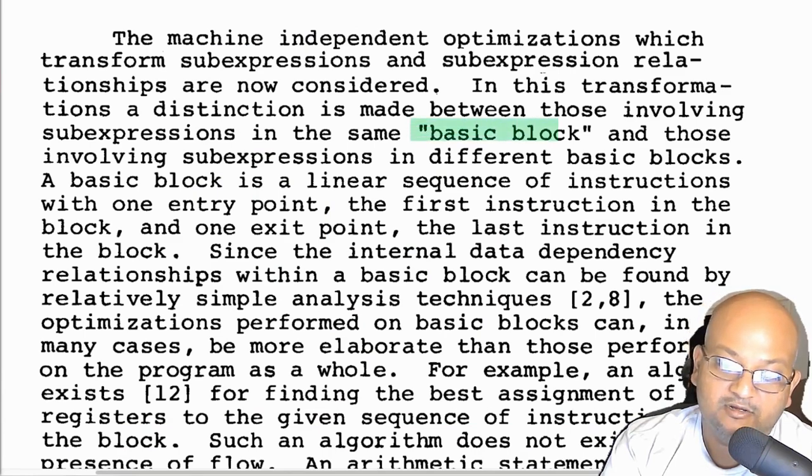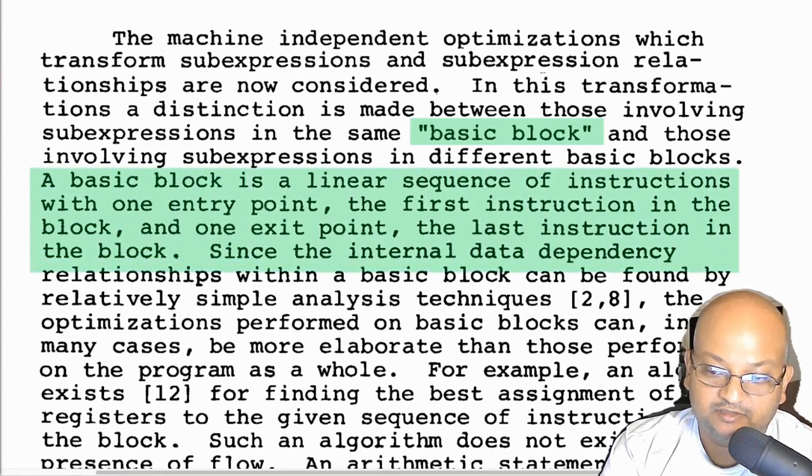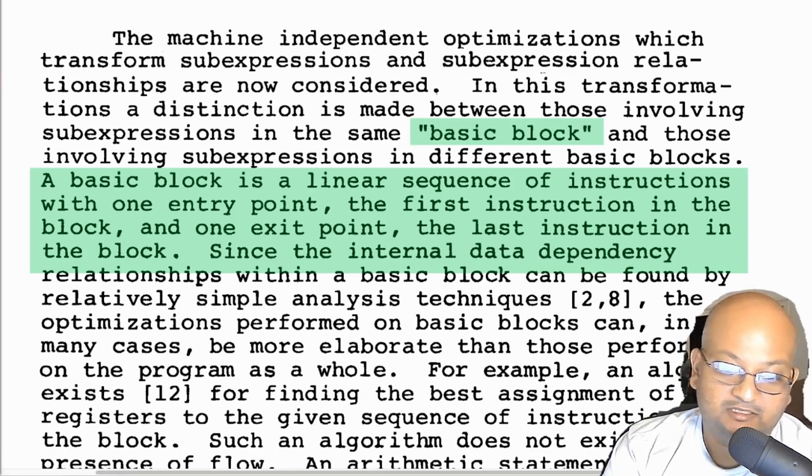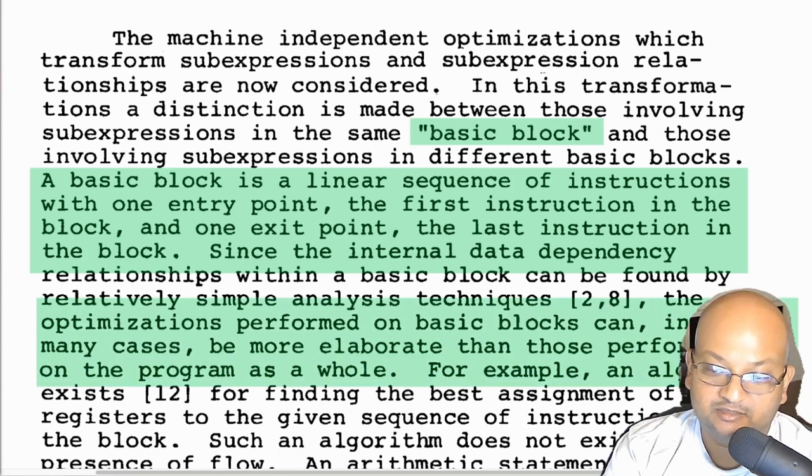Now we get into the optimizations that work on basic blocks. What is a basic block? It is basically a sequence of instructions where control enters only at the top, the beginning of the basic block, and control exits only at the end of a block. And the reason basic blocks are important is that within a basic block, you know that control only flows linearly. And so you can do optimizations inside a basic block that you could not do otherwise, when you don't know how control flows through the program.